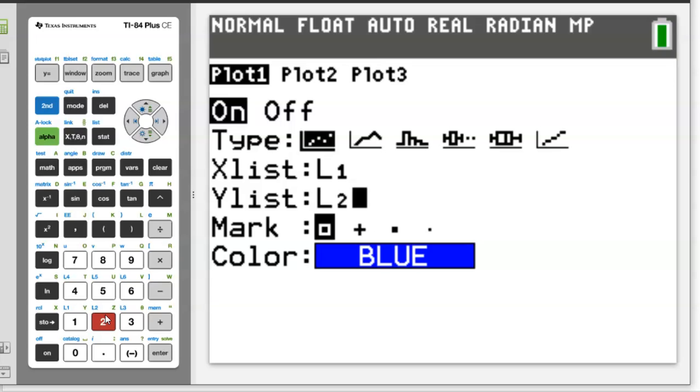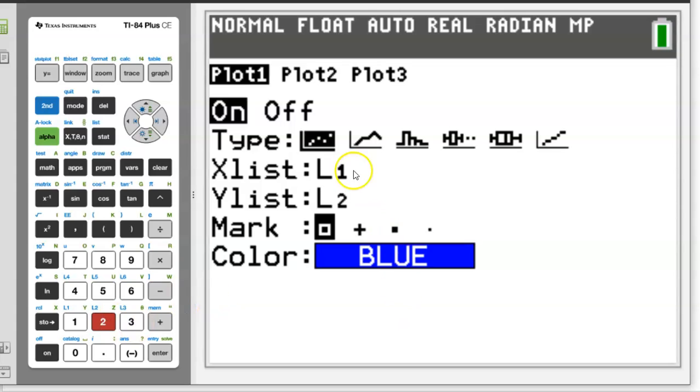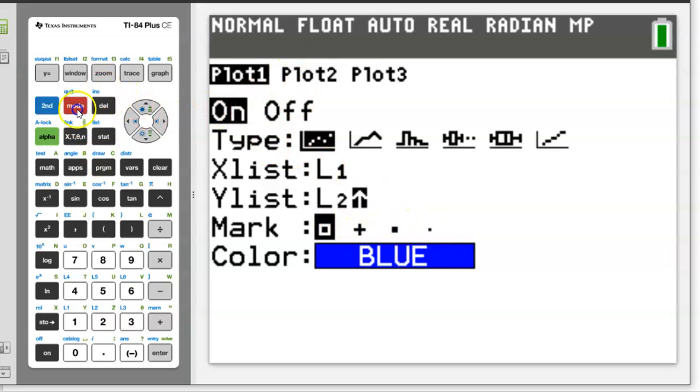You'll notice above the numbers one, two, three, four, five, six on the keypad are the L1, L2, L3, L4, and L5 and L6 as well. So again, L1, L2, you could choose what you want to do the dots with, whether they be squares, open squares, cross or dots, you know, whatever you want. Then whenever you're done with that, just kind of quit out of there and then hit zoom nine.